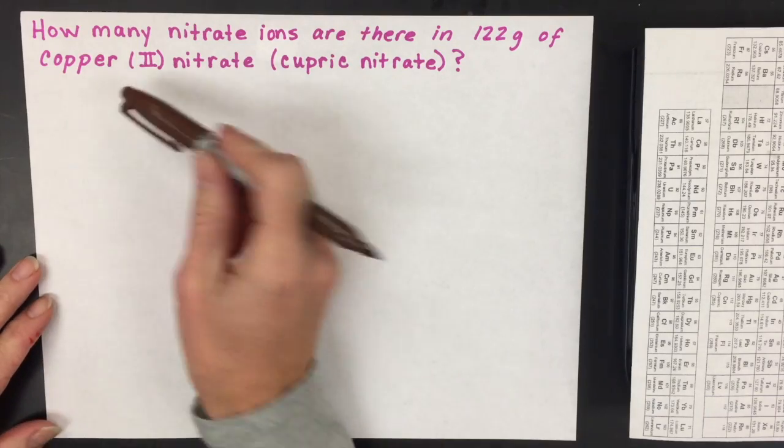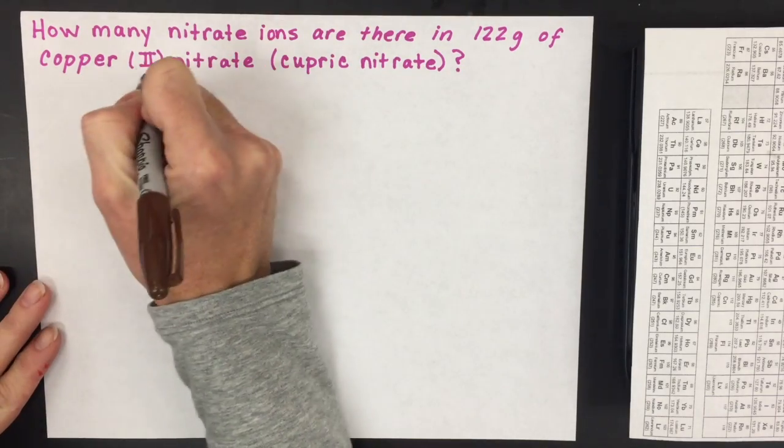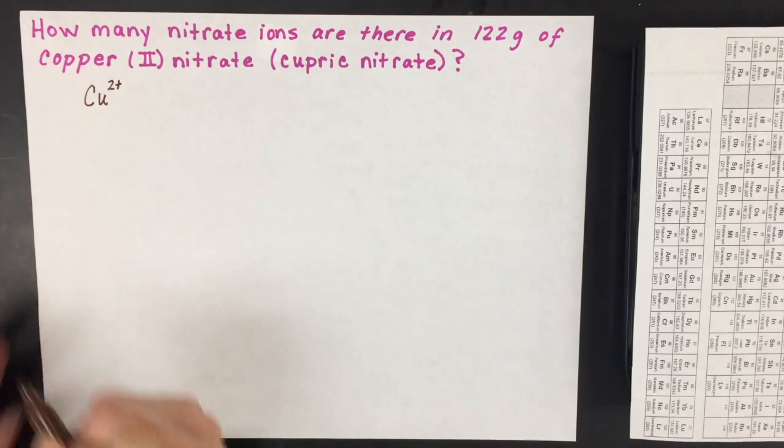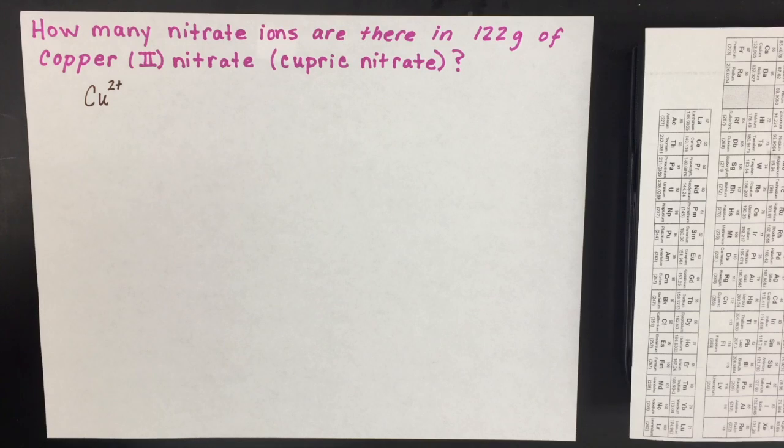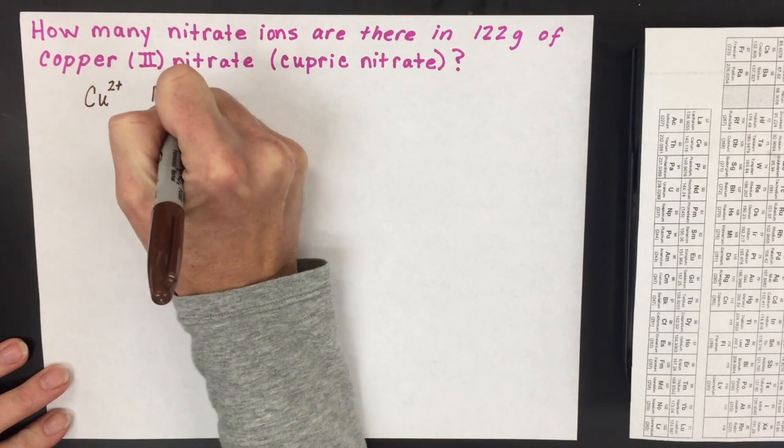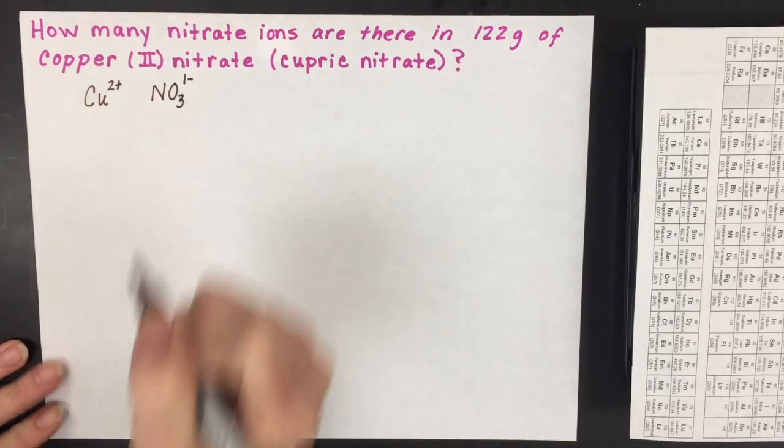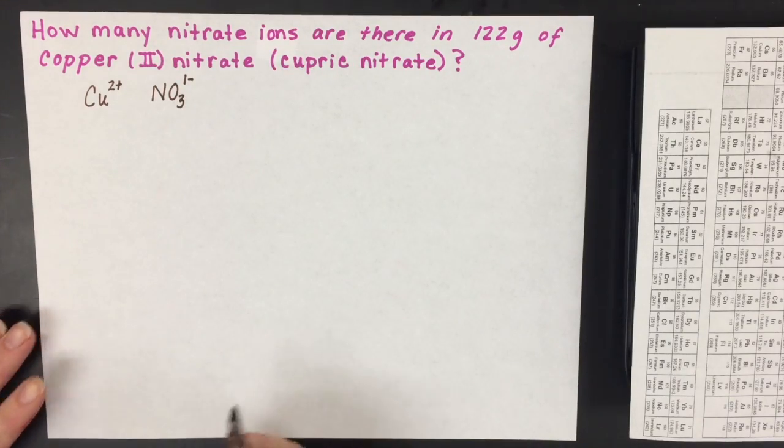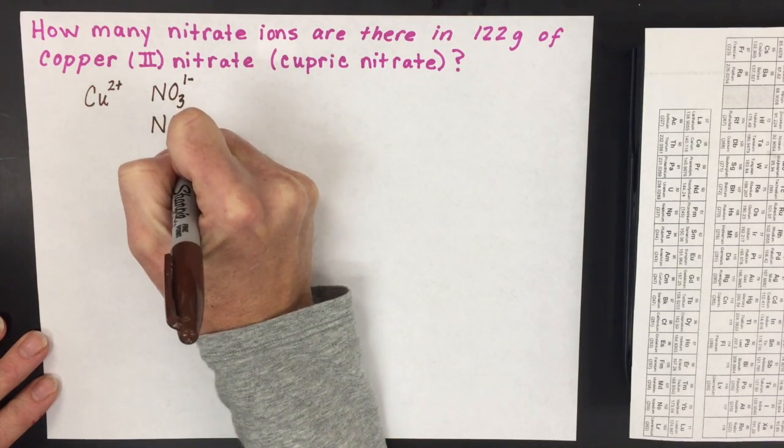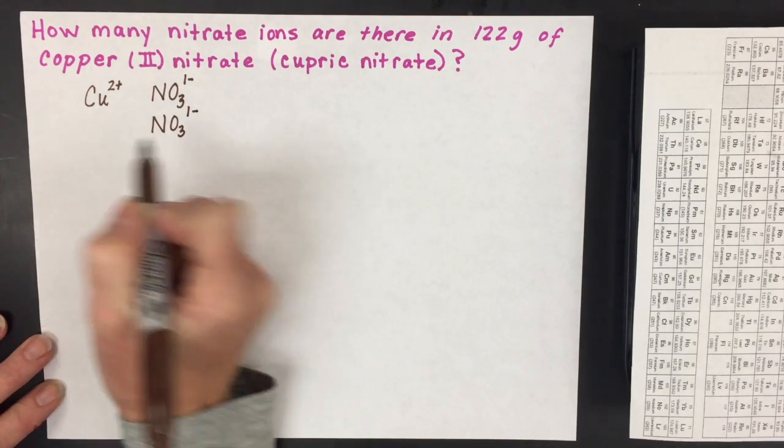As always, we have to write the compound correctly. Copper (II) means we're starting with the copper 2+ ion, and the polyatomic ion nitrate is NO3 with a 1- charge. To make this ionic compound neutral, you'll need two nitrate ions so that